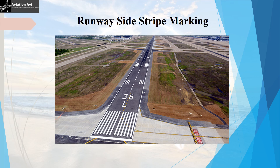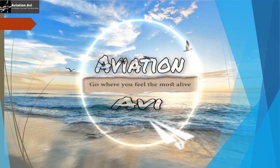The runway side stripe marking is present between the thresholds on each edge of the runway. For runways wider than 60 meters, the side stripe is positioned 30 meters on each side of the runway centerline. The width of the side stripe marking is 0.9 meters for runways of 30 meters total width, and 0.45 meters for narrower runways.